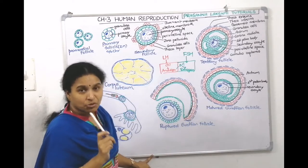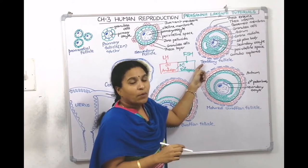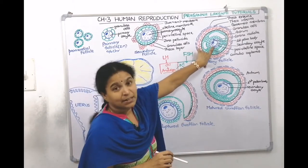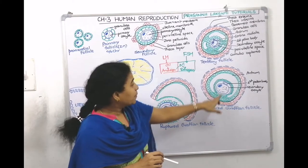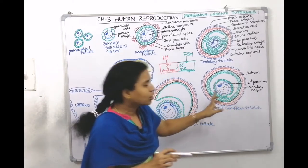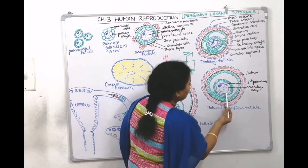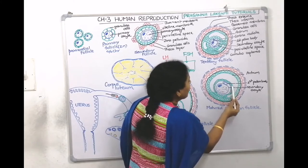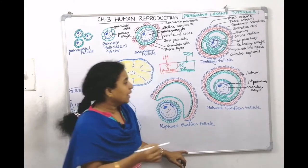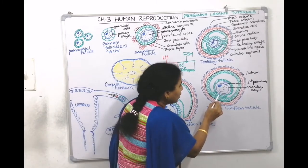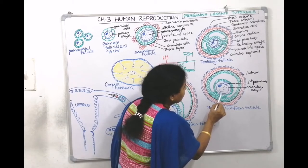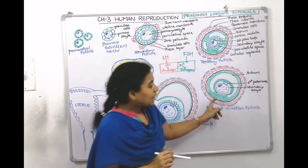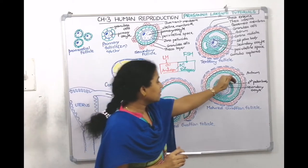From tertiary follicle, development into a matured Graafian follicle occurs under FSH influence. In the mature follicle, the secondary oocyte is pushed toward one corner while the fluid-filled antrum occupies the center. The granulosa cells arrange like a crown around the secondary oocyte — this is called corona radiata. The cluster of granulosa cells at one corner is called cumulus oophorus.